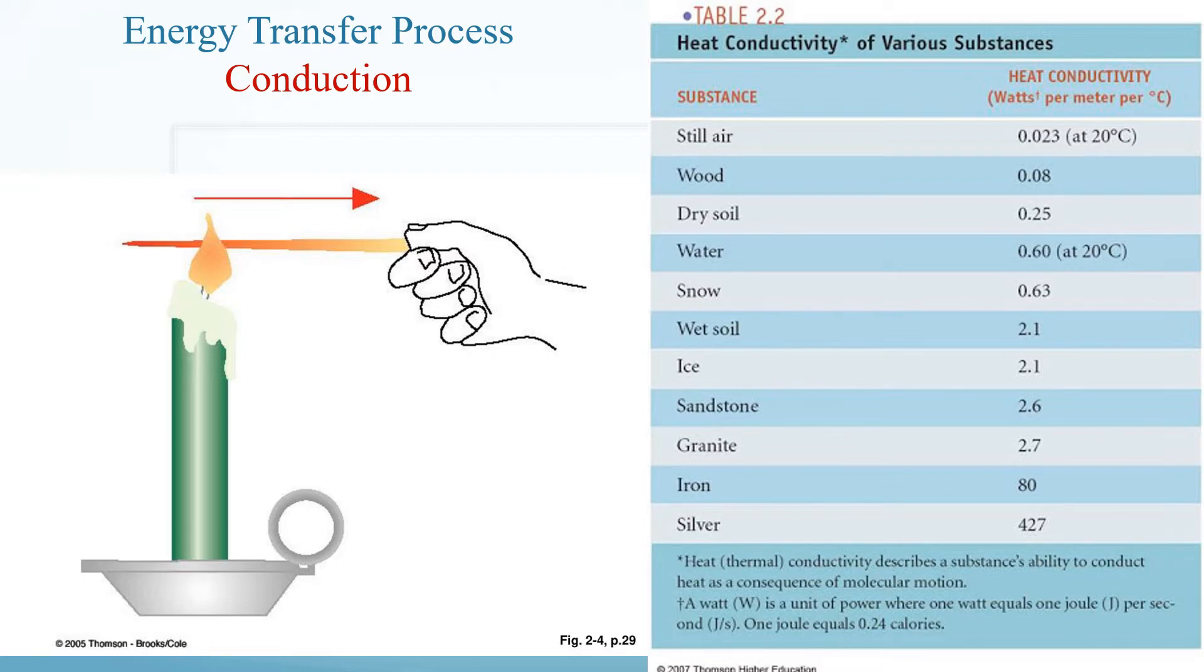How well they conduct heat depends on how their molecules are structurally bonded together. If you look at this table 2.2 here, it shows that solids such as metals are good heat conductors. It is often difficult to judge the temperature of metal objects. For example, if you're grabbing a metal pipe in a room temperature, it will seem much colder than it actually is because the metal conducts heat away from your hand more quickly.